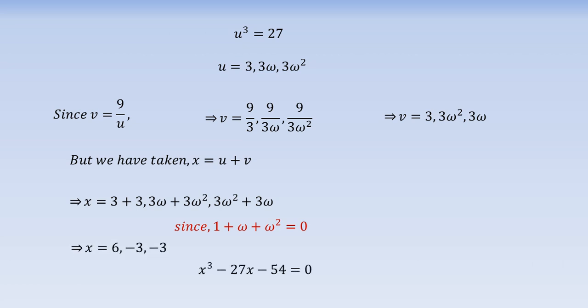This method can be used to solve all cubic equations whose square term is absent and the cubic equation must be monic. By monic, we mean the leading coefficient must be 1. If it is not, first we have to divide the whole equation by the coefficient of the leading term, and then apply the method.